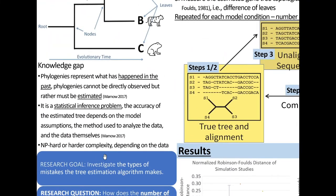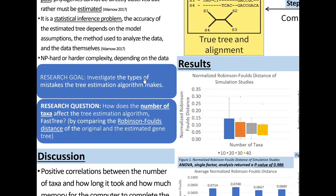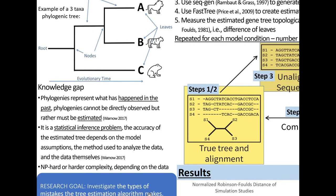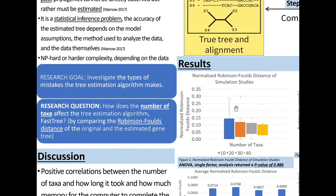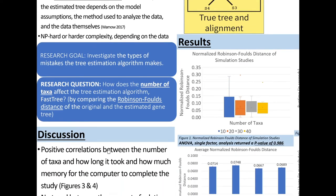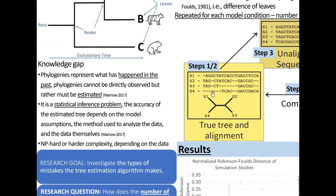The research goal is to investigate the types of mistakes the tree estimation algorithm makes. This is referring to the algorithms that make these phylogenetic trees and lineages. My specific research question is how does the number of taxa affect the tree estimation algorithm FastTree by comparing the Robinson-Foulds distance of the original and the estimated gene tree.